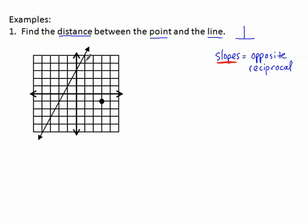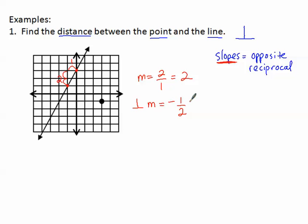Let's find a couple of points that are close together on this line. I'm going to count the rise over the run: up two and over one. So the slope of this line is two over one, or simplified as two. The perpendicular slope — the line that's perpendicular — will have a slope that's the opposite reciprocal. The reciprocal of two over one is one over two, and the opposite of positive is negative. So the perpendicular slope is negative one-half.